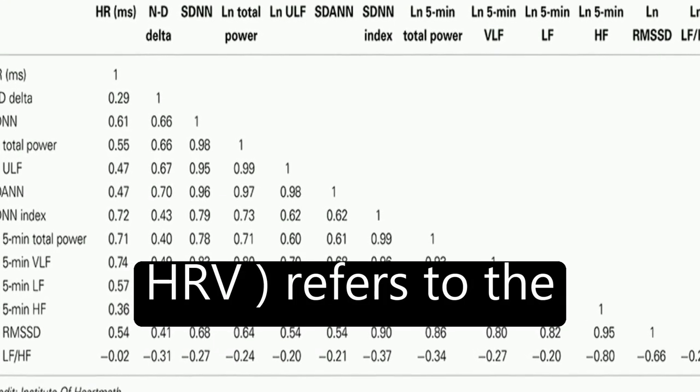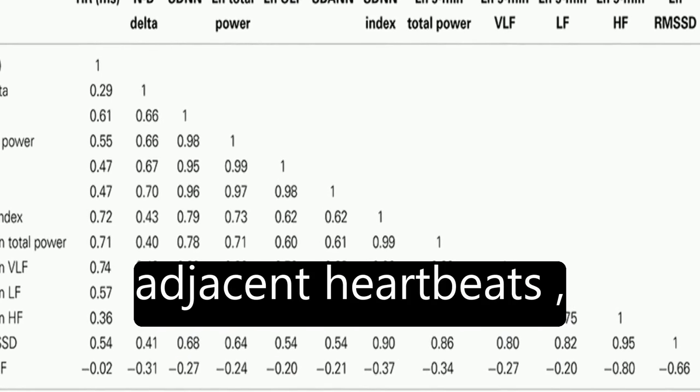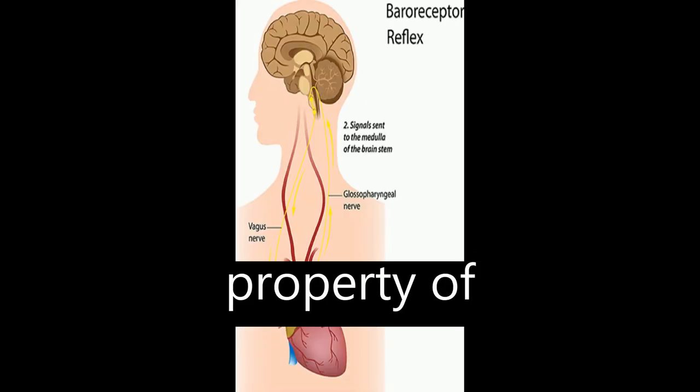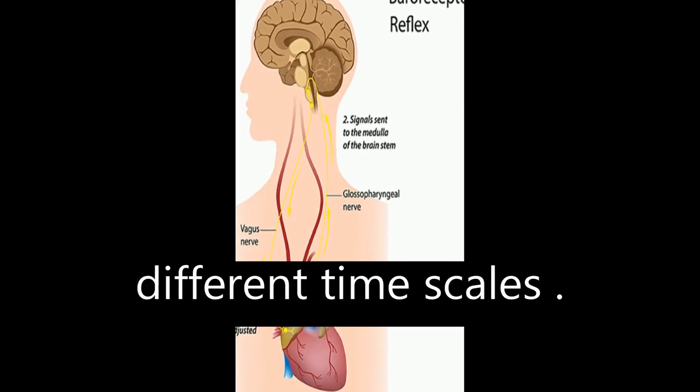Heart Rate Variability, or HRV, refers to the variation in time intervals between adjacent heartbeats, which is an emergent property of interdependent regulatory systems that operate on different time scales.